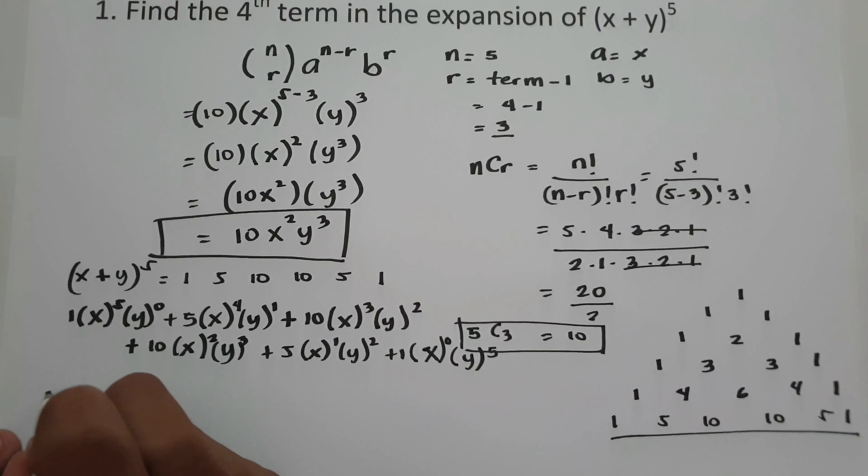Let's have another example. On number 2, we are going to find the fifth term in the expansion of the quantity 2x minus 3y raised to 5. So to find the fifth term, let's identify the given. The value of n is 5, that is the exponent. And r is the term we are looking for. To find the value of r, we use term minus 1, so since we are looking for the fifth term, that is 5 minus 1, so r is 4.